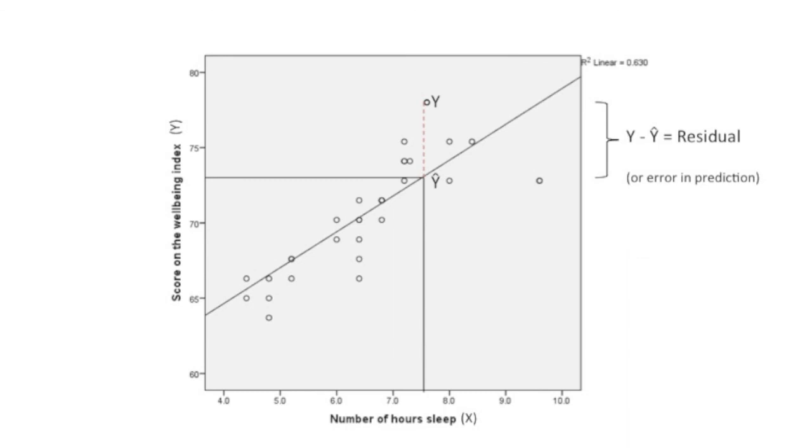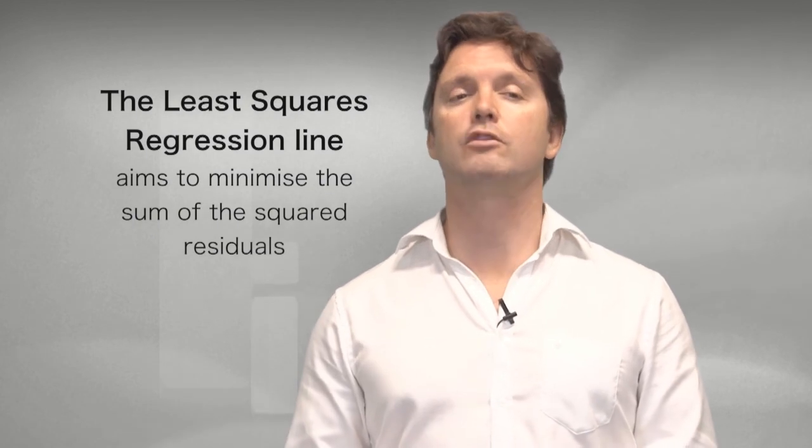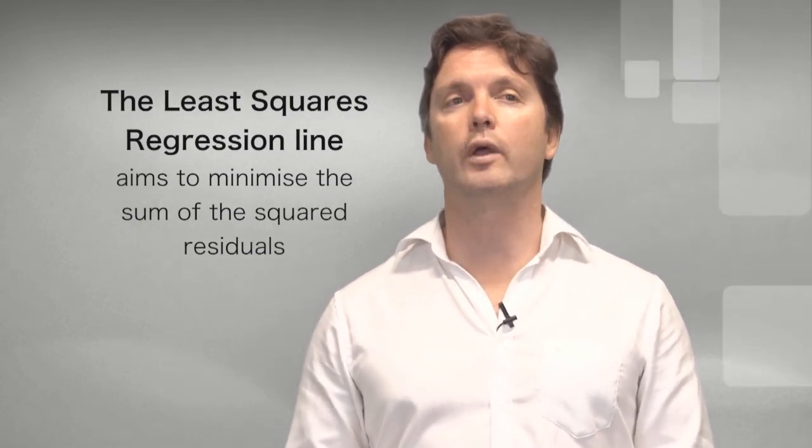Errors in prediction, also known as residuals, as I mentioned before, which is the predicted score, predicted wellbeing score, taken off the actual wellbeing score. And the least squares regression line aims to minimise the sum of those squared residuals.